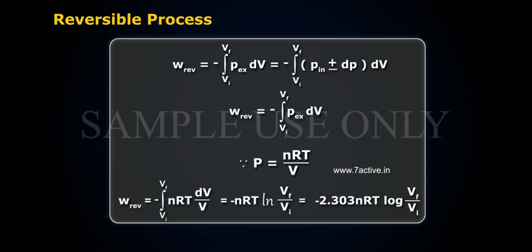WREV equals to minus of integral VI to VF, NRT DV by V equals to minus NRT LN VF by VI equals to minus 2.303 NRT log VF by VI.